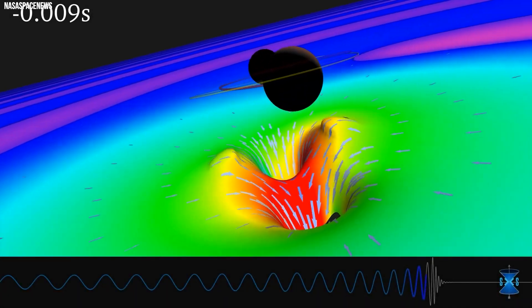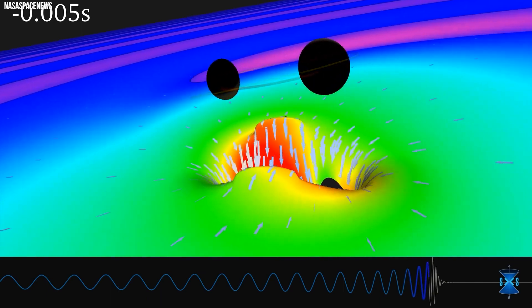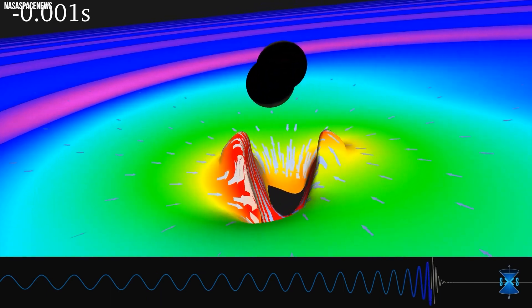Traditional electromagnetic signals, such as radio waves, suffer from signal degradation over long distances due to the inverse square law, which dictates that the intensity of a signal diminishes with the square of the distance from the source.